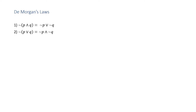DeMorgan's Laws. Law 1: The negation of the conjunction P and Q is not P or not Q. And the negation of the disjunction P or Q is not P and not Q.